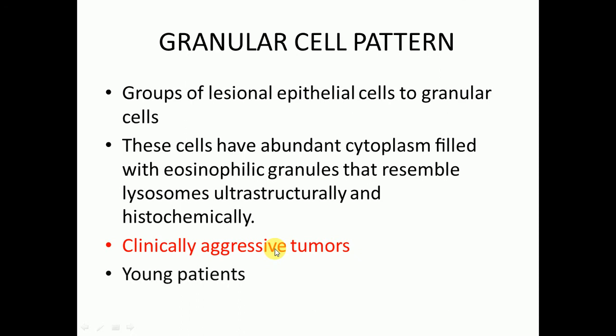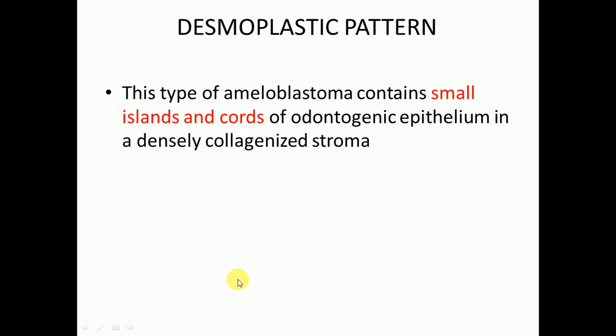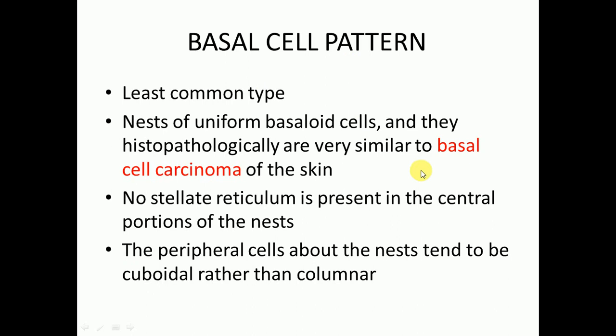The desmoplastic pattern contains small islands and cords of odontogenic epithelium within a densely collagenized stroma, which appears to shrink those islands and cores. The basal cell pattern resembles basal cell carcinoma — it is the least common type. Nests of uniform basaloid cells are present, very similar histopathologically to basal cell carcinoma of the skin. No stellate reticulum is present in the central portions, and the peripheral cells tend to be cuboidal rather than columnar.